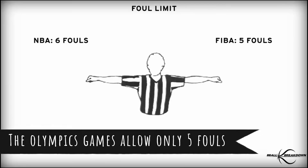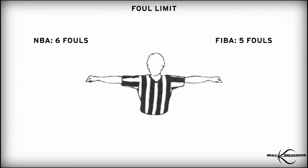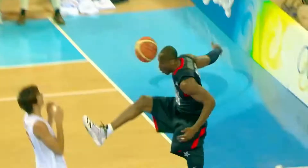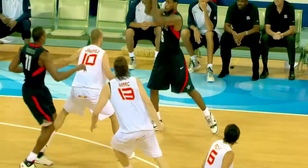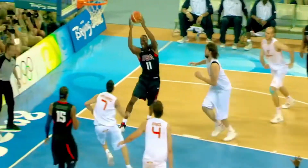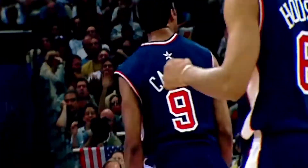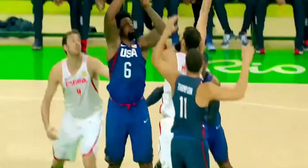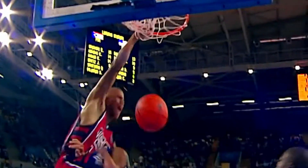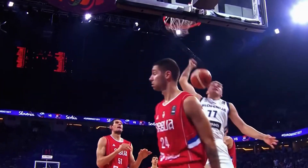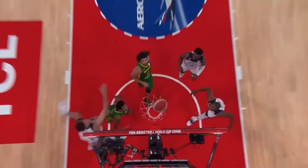The Olympic Games only allow five fouls. The NBA permits players to accumulate six fouls before being ejected from a game, with two technical fouls resulting in immediate ejection. Only five fouls are allowed in Olympic basketball before a player is forced to sit out for good. Both allow teams to reach the bonus after five team fouls in a quarter, when the fouled player shoots free throws instead of taking the ball back out of bounds, with a reset shot clock after each foul.